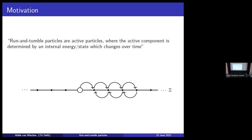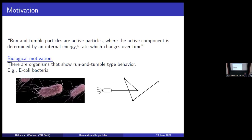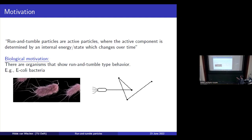The first motivation is that there are actually organisms that show this run and tumble type of behavior. For example, the E. coli bacteria — you can here see the movement of an E. coli bacteria where it runs to the right and then changes its direction, or changes its internal state as we will call it, to go in another direction, and so on. This is really some run and tumble movement.